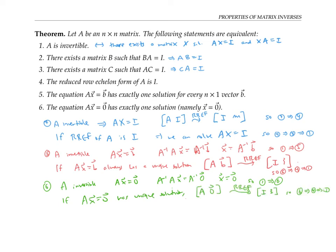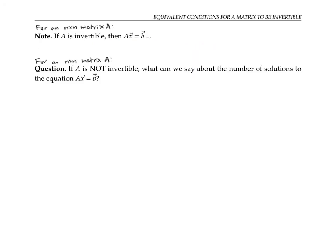So all of these conditions are equivalent. We've seen that if A is invertible, then Ax equals b has a unique solution for any vector b.